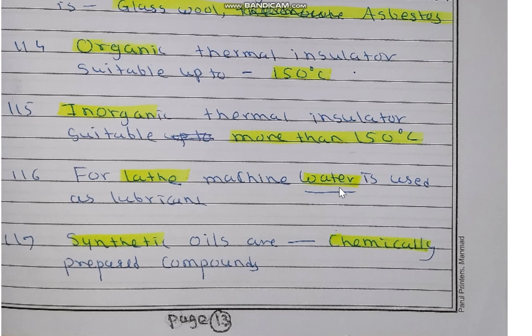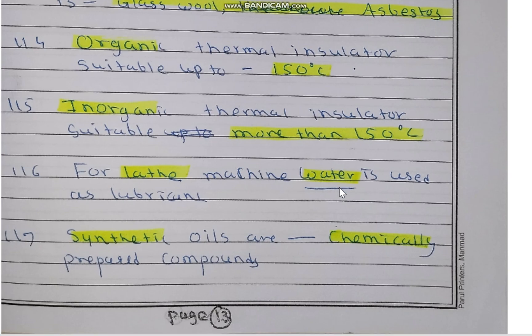For a lathe machine, water is used as a lubricant. Synthetic oils are chemically prepared compounds. These are the important MCQs for the exam from chapters 2 and 3 of Basic Chemistry, course code 22102. Thank you.